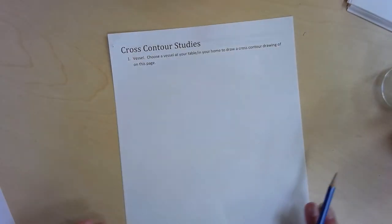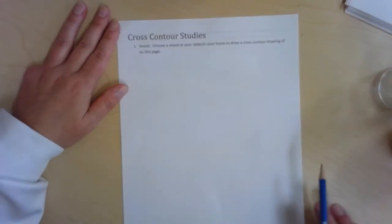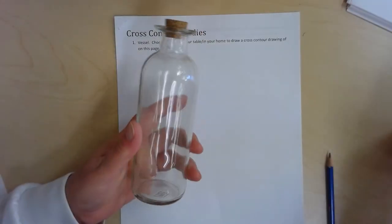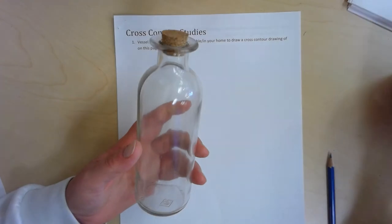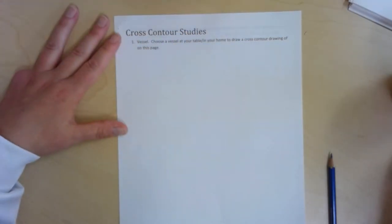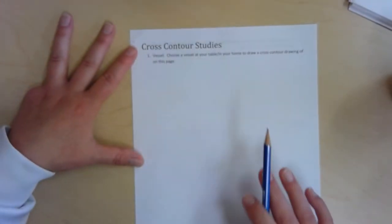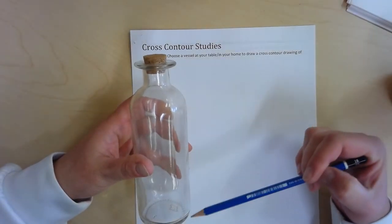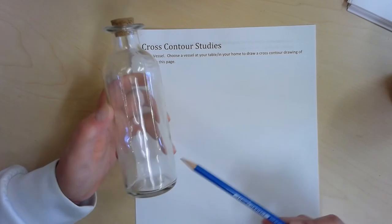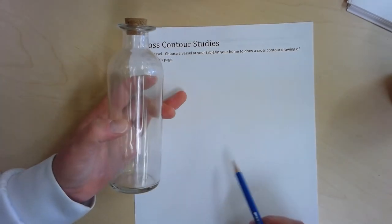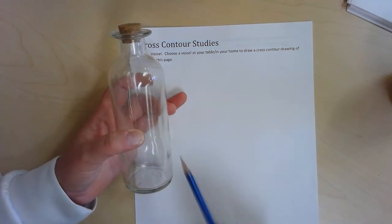you're going to go to the next page which is a study of a vessel—whether you choose a bottle, glass bottle, can, vase, something at your home that holds something. When you start working with it, you have to decide: do I want to do my lines vertically or horizontally? If you're doing something like a glass bottle like mine, I would probably stick with